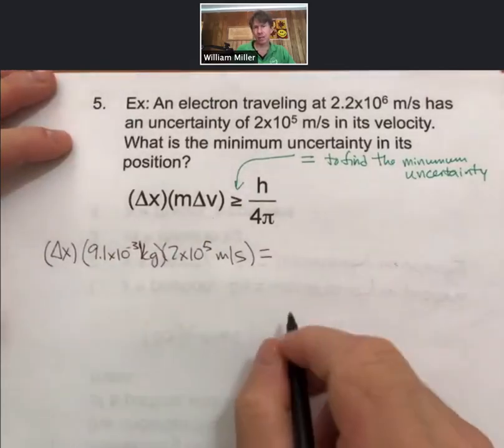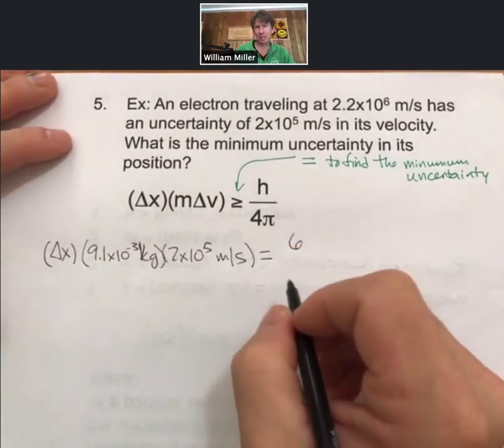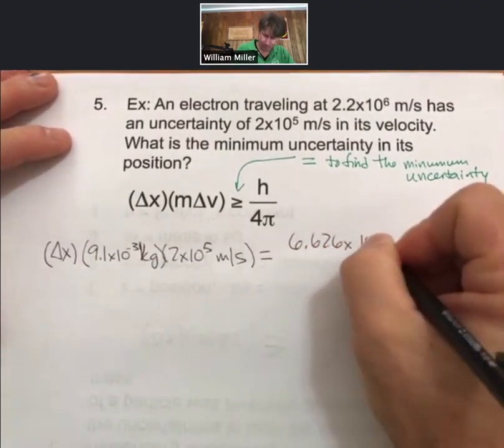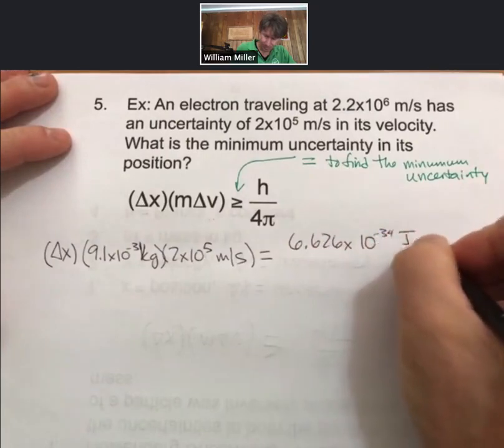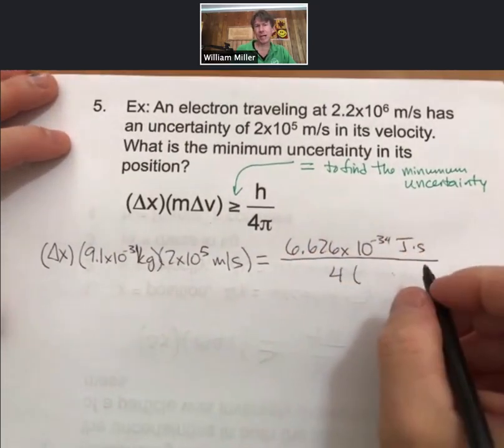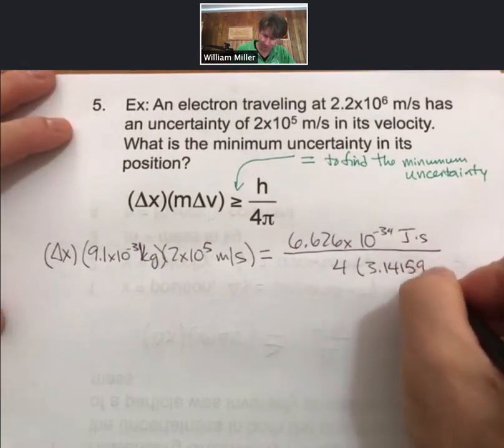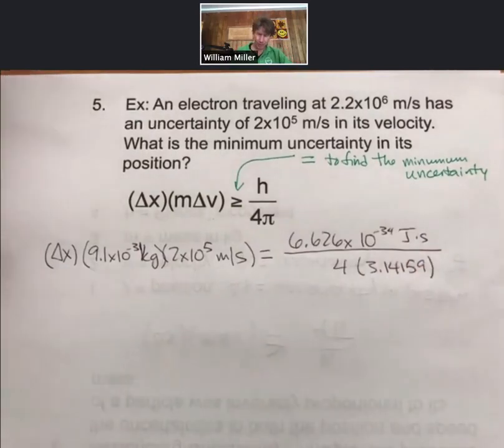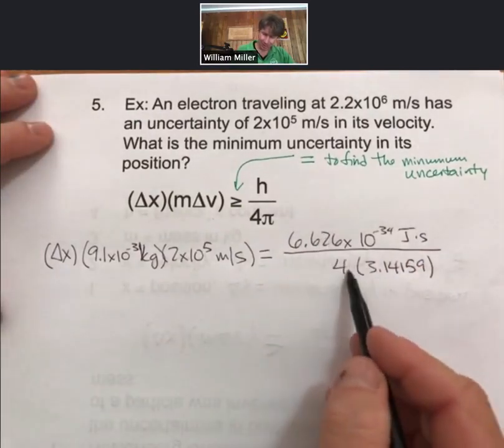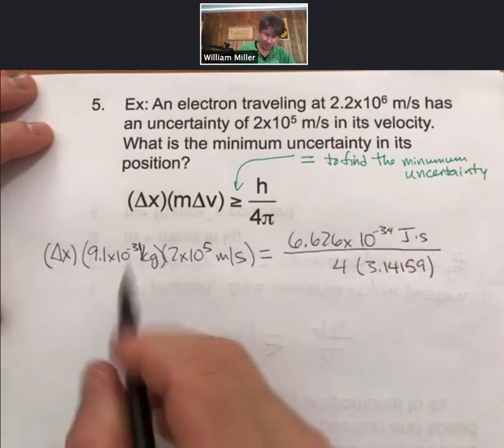Mass of an electron, 9.1 times 10 to the minus 31 kilograms. And then delta x, we don't know. It is equal to find the minimum uncertainty. Planck's constant, 6.626 times 10 to the minus 34th Joule seconds over 4 and pi. So plugging this in, we've got Planck's constant divided by these two numbers, divided by these two numbers as well to find delta x.